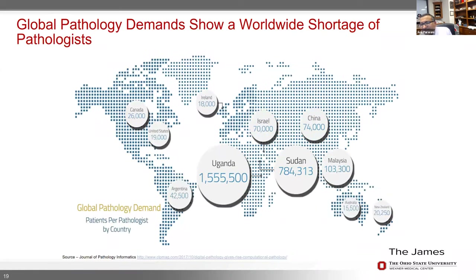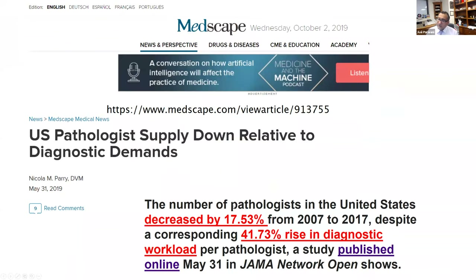If you look at global pathology demands, there is a worldwide shortage of pathologists. In some countries in Africa, the ratio is extremely concerning. In the United States, it's estimated at 1 pathologist per 19,000 patients. From 2007 to 2017, the number of pathologists in the US decreased by 17%. In the same time period, the number of diagnostic tests increased by about 40% or more.